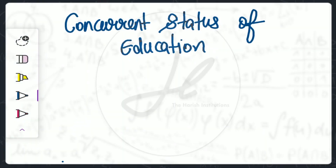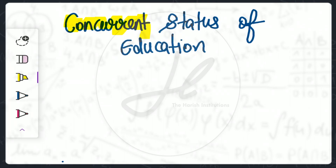Hello everyone, welcome to our YouTube channel. In this video we will discuss the first year paper 2, that is Contemporary Indian Education, Unit 1, Part 2. Part 1 we have already covered. Now we will discuss Part 2, in which we will discuss the concurrent status of education — what is the meaning of the concurrent status of education and what is the status of education.